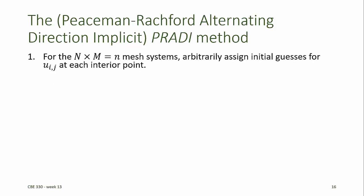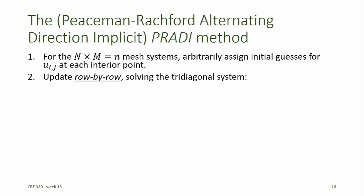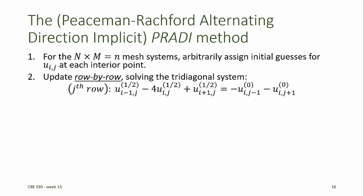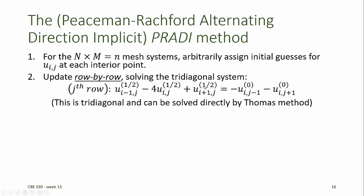We arbitrarily assign initial guesses for each of the u_ij at each interior point, and then we update row by row, solving the tridiagonal system. For each of the unknown mesh points, we keep all of the elements in the jth row on the left-hand side, and move the j minus 1 and j plus 1 elements over to the right-hand side. The superscript 0 in parentheses represents our initial guess for the values of u at these two points. The superscript 1/2 on the left-hand side represents the half iteration of our guesses for the unknown values of u in the jth row. We do that for each row, and that system will be tridiagonal and can be solved rapidly using the Thomas method.